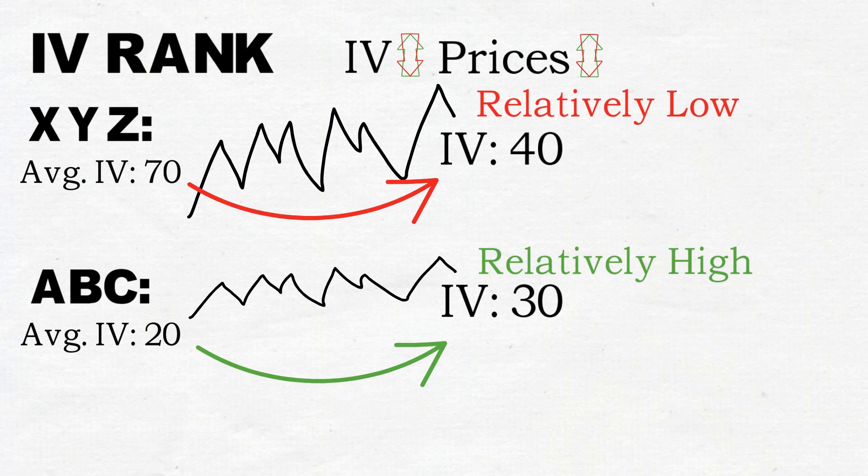Then this means that ABC's implied volatility is relatively high and XYZ's implied volatility is relatively low, even though XYZ's absolute volatility is greater than ABC's. I hope that this shows that it's very hard to compare the implied volatilities of different securities because different securities can have very different trading characteristics.